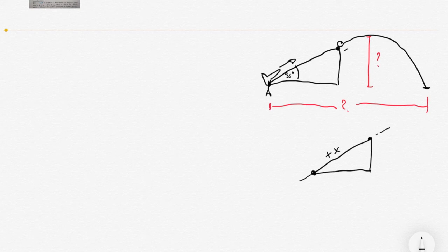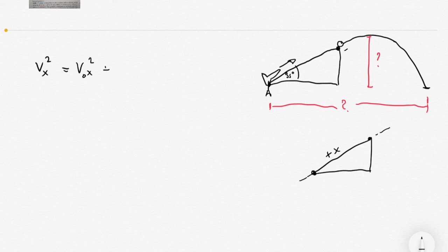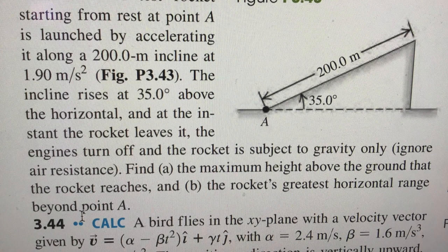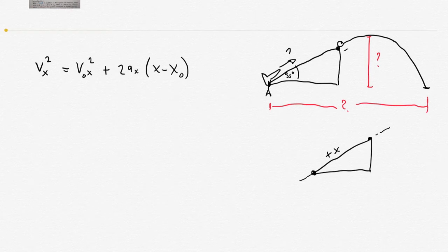Our reference axis is along the plane in which the rocket is accelerating. Starting with the equation of motion, we're interested in the rocket's velocity when it leaves the ramp: v² = v₀x² + 2·ax·(x − x₀). The length of the incline — 200 meters — is our displacement x.